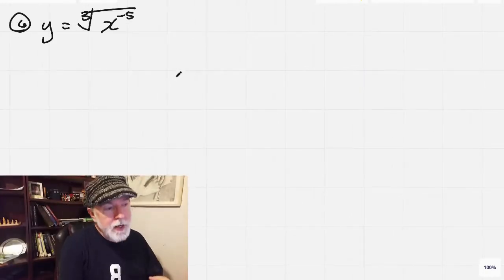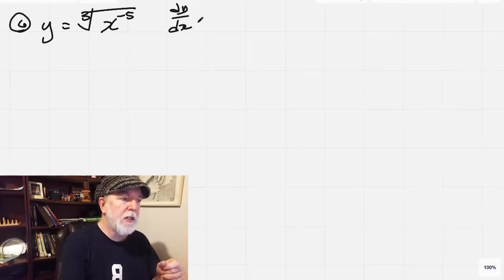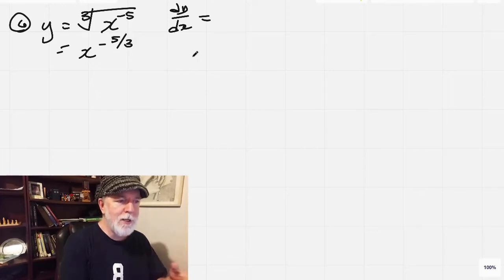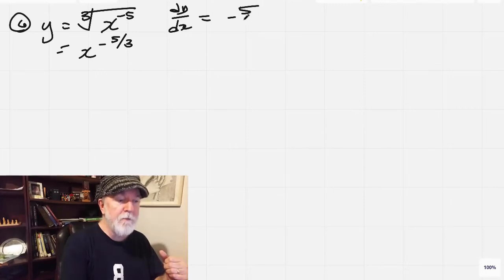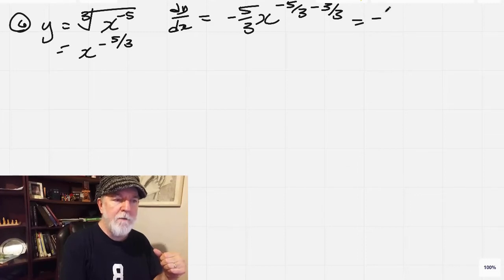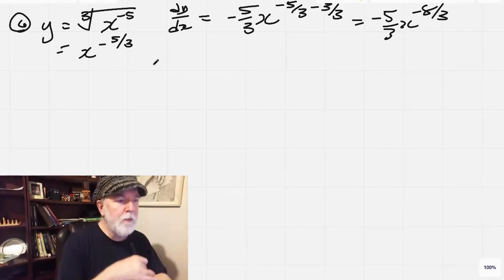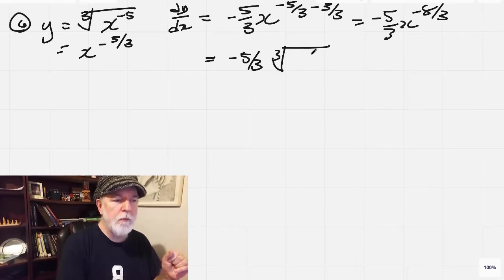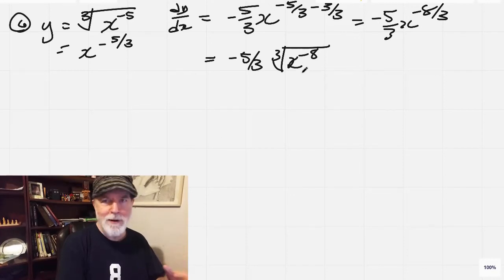y equals the cube root of x to the negative fifth. So dy by dx equals, let's actually make sure we write this as x to the negative 5 over 3. And so now dy by dx, we've got the negative 5/3 here up front, and then x negative 5/3 minus 3/3 equals negative 5/3, x to the negative 8/3, and then we'll revamp it in the form that it was given to us. So that finally equals negative 5/3, cube root of x to the negative 8. Now it looks like the question.